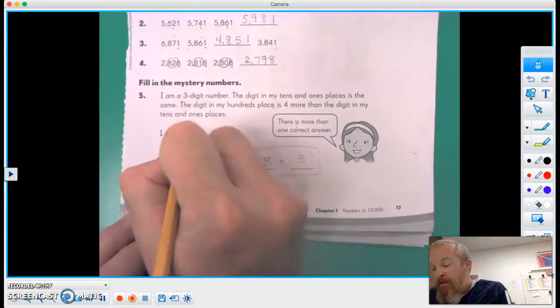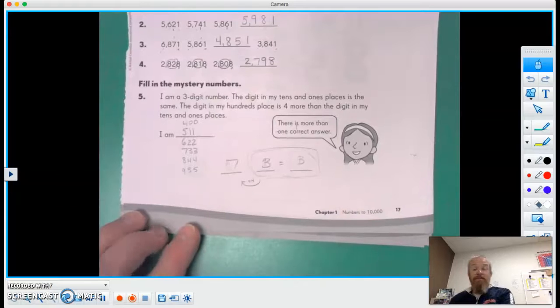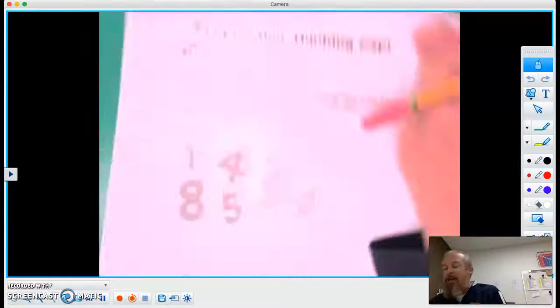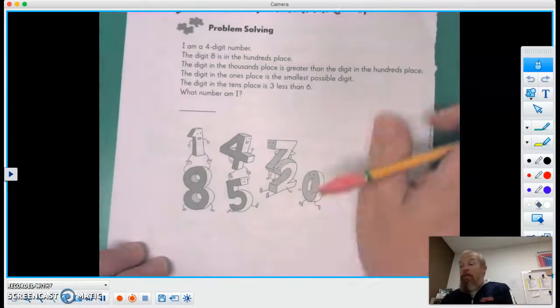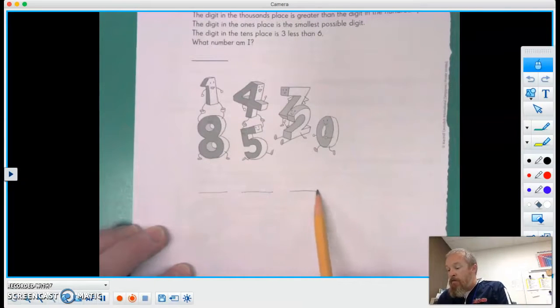And there's one more up on this end. If we put zeros there, we could do 400. So I have quite a few different answers available for that one. All right, here we are, the last page. Put On Your Thinking Cap problem solving. This time, I am a four digit number.